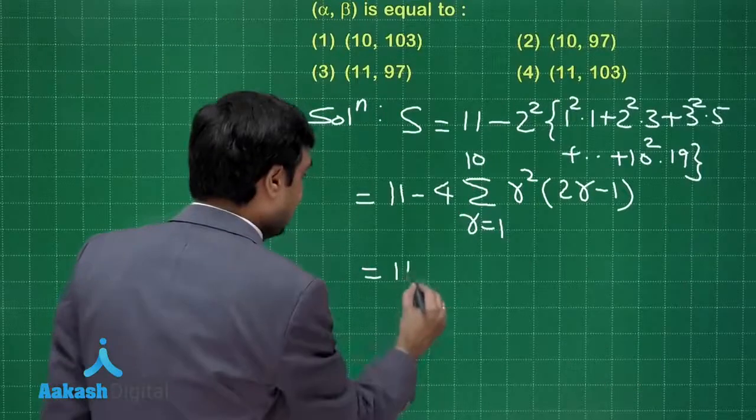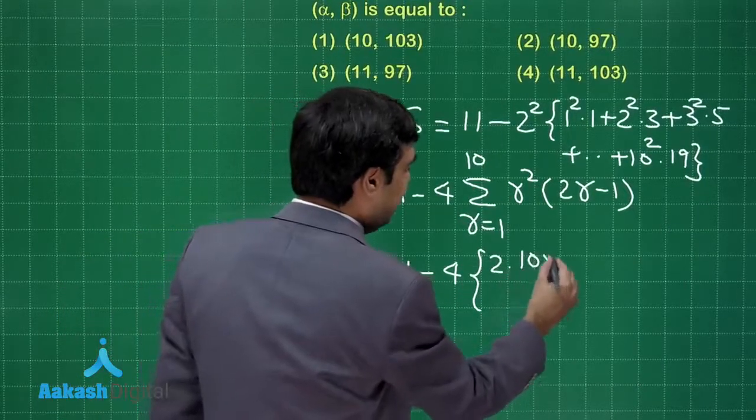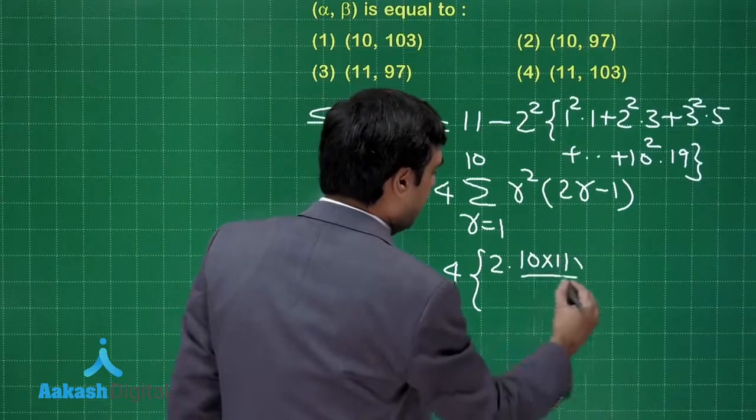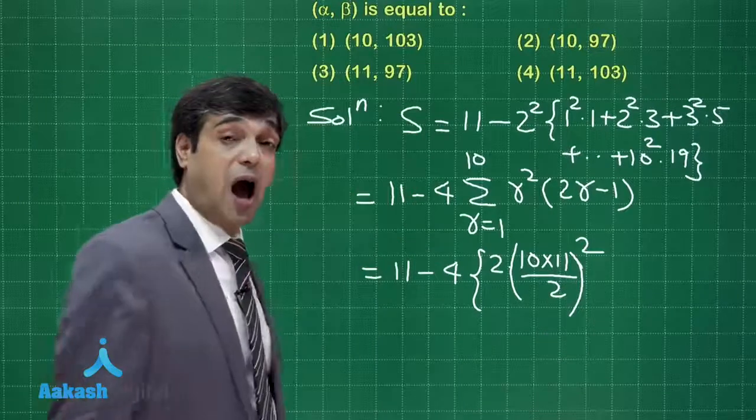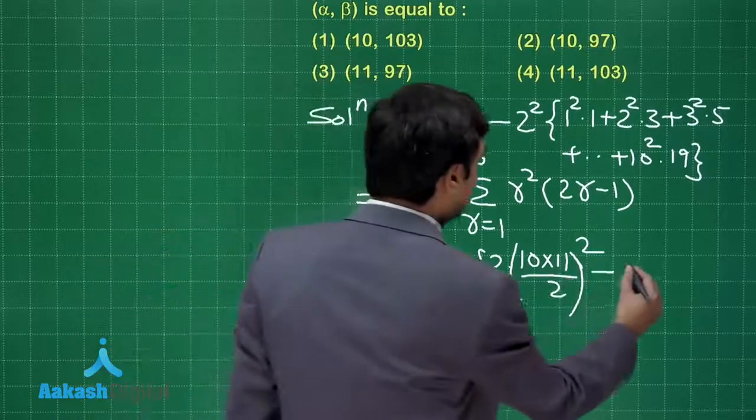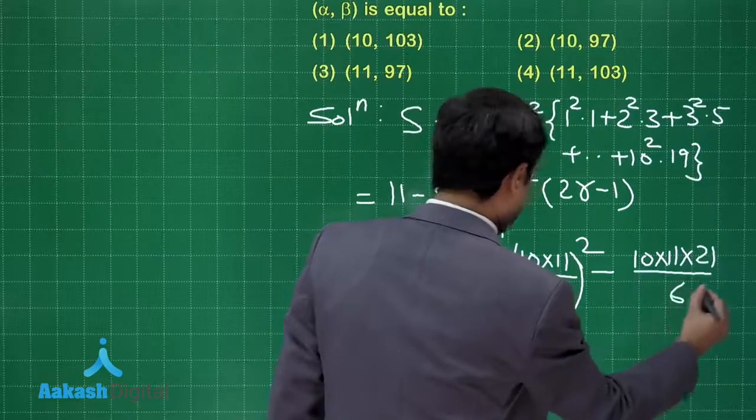Now we can further rewrite it as 11 minus 4 times 2 into (10 into 11 upon 2) whole squared, this is for summation r cubed, minus 10 into 11 into 21 upon 6.